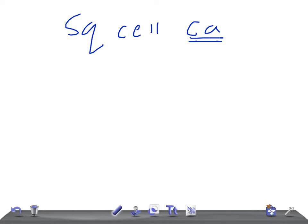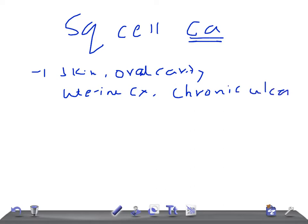Squamous cell carcinoma most commonly occurs in the skin, oral cavity, uterine cervix, and at the edges of chronic ulcers. They start from the edges of the chronic ulcer—that's really very important.